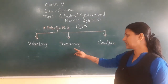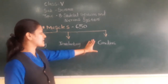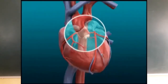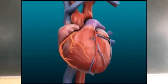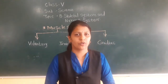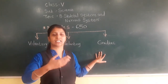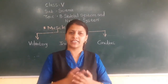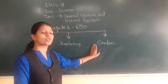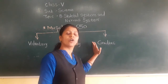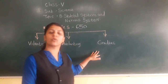The third type of muscle is cardiac muscle, which is present in the walls of our heart. Our heart works day and night and does not take rest. The working of the heart is not under our control, so cardiac muscle is also not under our control. These muscles work throughout our life.